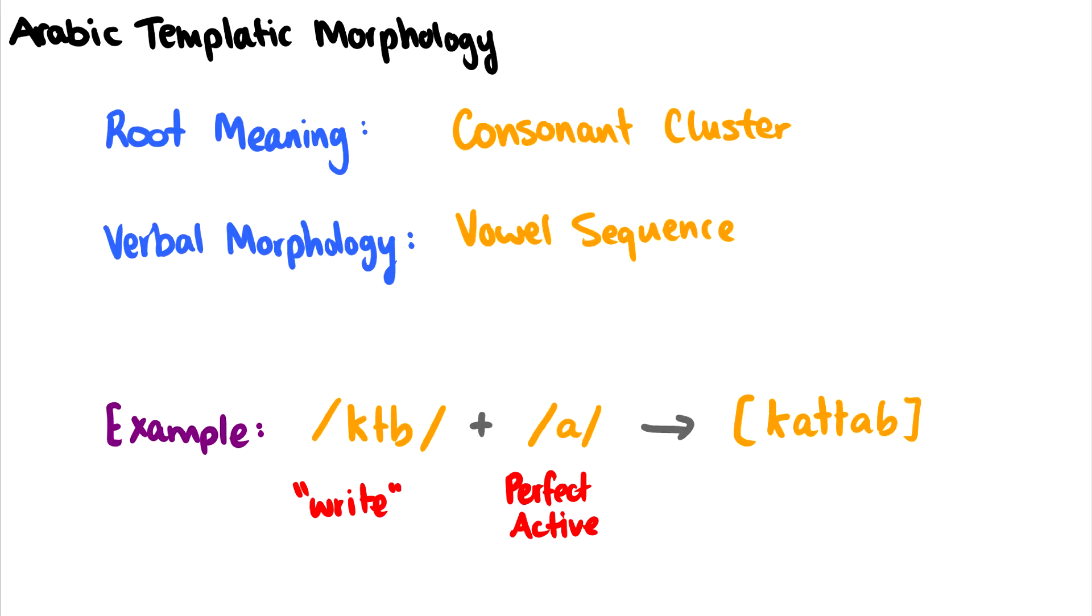Okay, another really cool thing we can do with the CV tier is something called Arabic templatic morphology. And this is super exciting. I'm sure in any course you take with phonology or morphology, you'll talk about this at some point. Essentially, with Arabic, you have a root meaning, and the root meaning is a consonant cluster. But the verbal morphology is done based on some sequence of vowels. So for instance, the word right would be something like ktb, but the perfect active verbal morphology would be something like ah. And somehow out of that, we get this word katab.